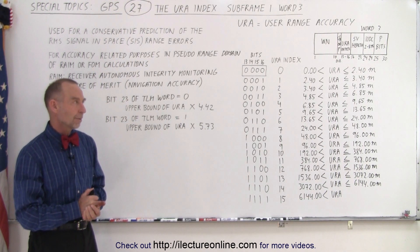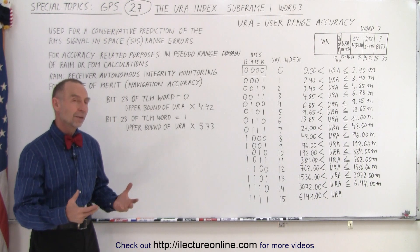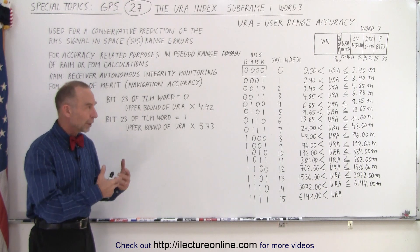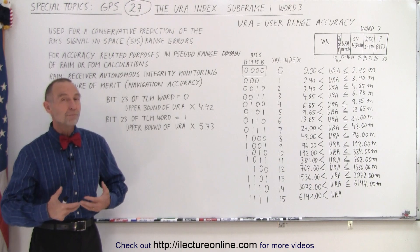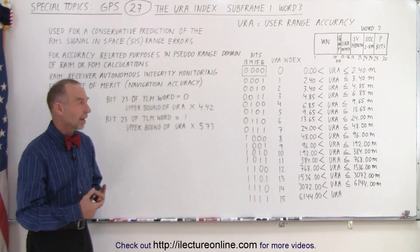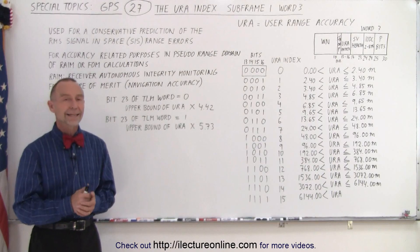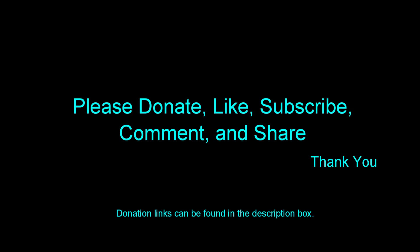Now you may look at these numbers and think those numbers look pretty big, and you're absolutely right — they are very big. But for more modern satellites and more modern equipment, we can do way better than that. The URA index was modified for later designs that give much smaller ranges, and we'll show you what those look like in the next video. Thank you.